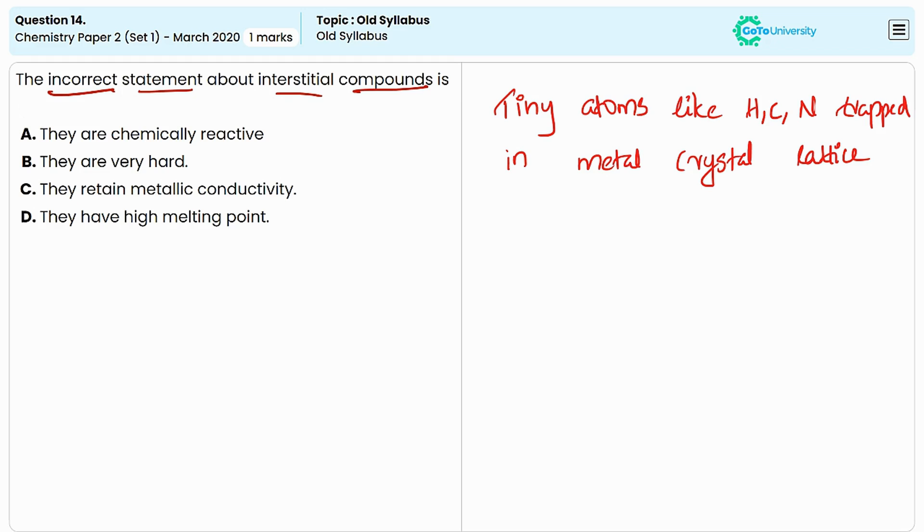The first one is they are chemically reactive. This is a wrong statement because the interstitial compounds are generally exhibiting lower chemical reactivity compared to the other compounds, and this is due to several factors.